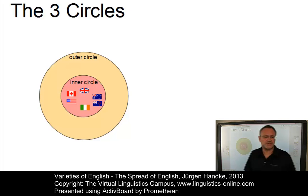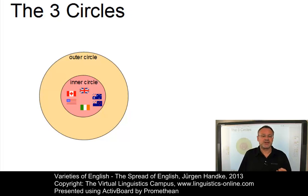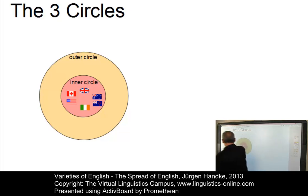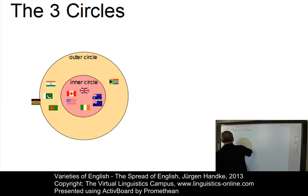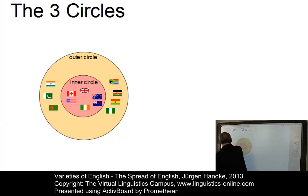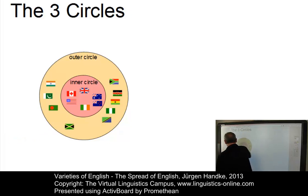The second circle, the so-called outer circle, includes countries colonized by Britain and the United States where English is spoken as a second language and where it plays an important historical and governmental role in multilingual settings. The central ones include, for example, in Asia: India, Pakistan and Bangladesh. In Africa: South Africa, Kenya, Ghana, Nigeria, and Tanzania. And then in the Caribbean, Jamaica, and in the Pacific Ocean, the Philippines.